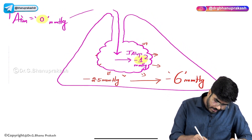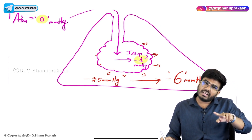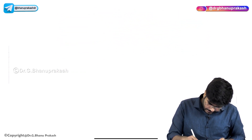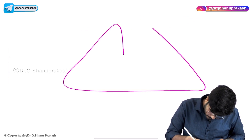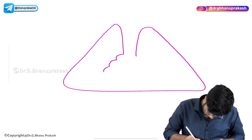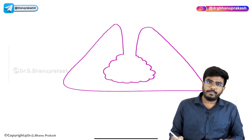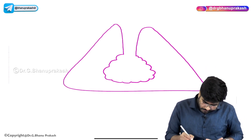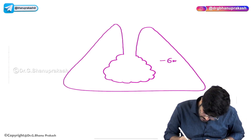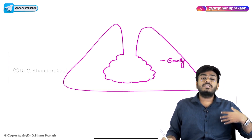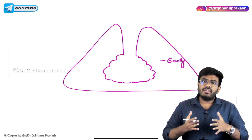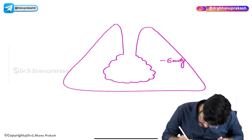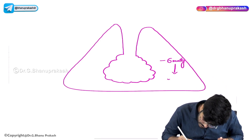Now let's talk about what happens during expiration — it's the reverse. During expiration, the diaphragm is relaxing and the chest wall is collapsing back. Everything is reversing, so the intra-pleural pressure goes from minus 6 back to minus 2.5 mmHg.